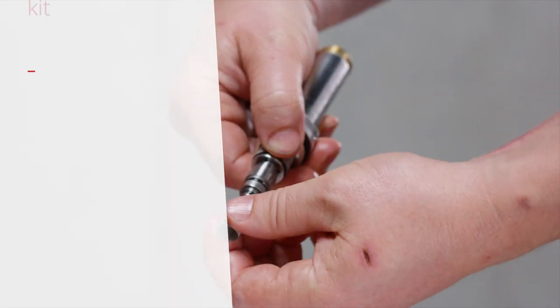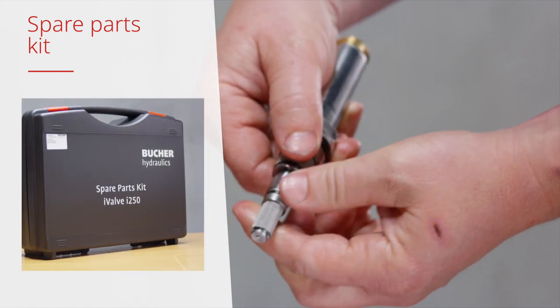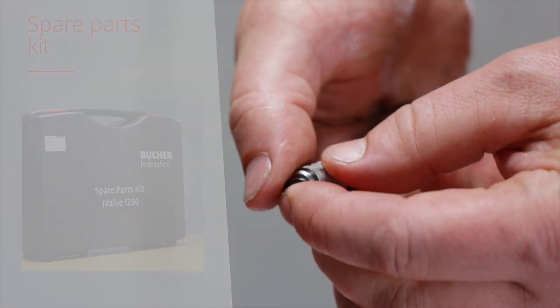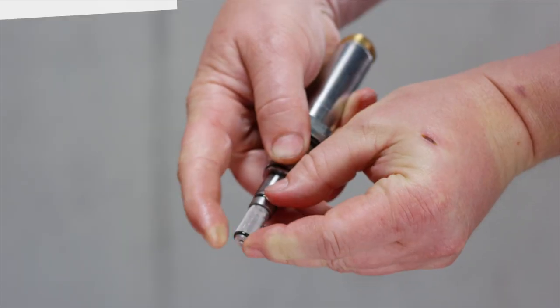Push the new filter strainer onto the pilot valve. Insert the new O-ring into the groove of the pilot valve.